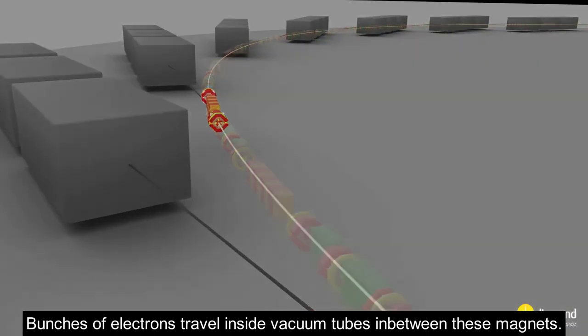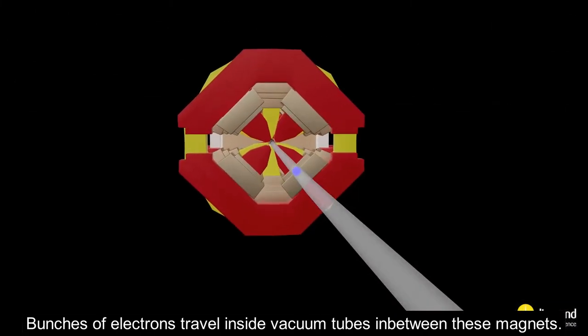Bunches of electrons travel inside vacuum tubes in between these magnets.